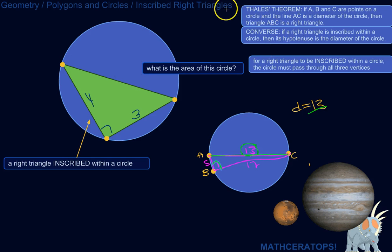We could apply the converse of Thales' theorem by asking, what's the area of this circle? This is a right triangle inscribed within a circle, so we know its hypotenuse is the diameter of the circle. We could use the Pythagorean theorem to figure out what the hypotenuse is.